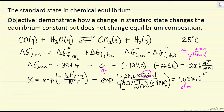This is dimensionless, and so equilibrium constants have no dimensions — they're ratios of activities. Remember, this equilibrium constant is for the standard state of water in the gas phase, so one bar ideal gas.